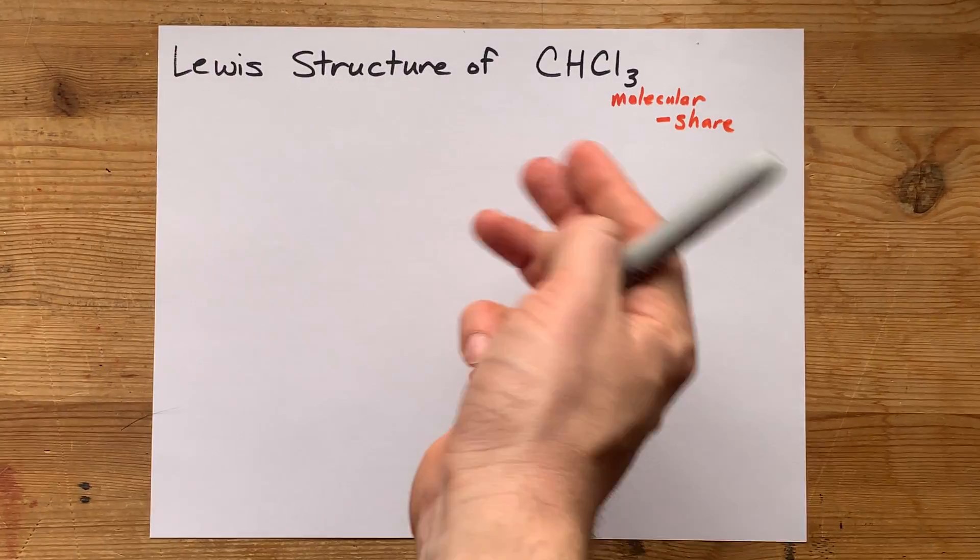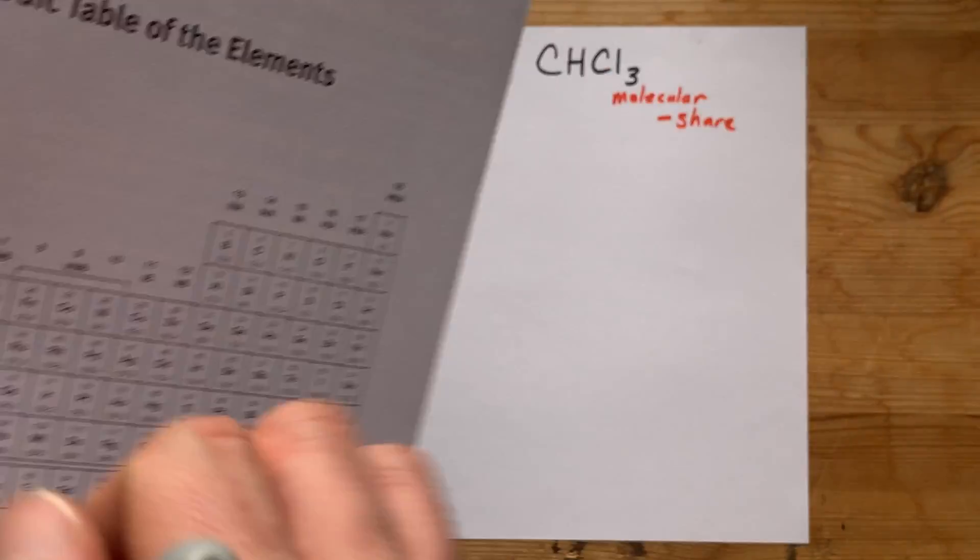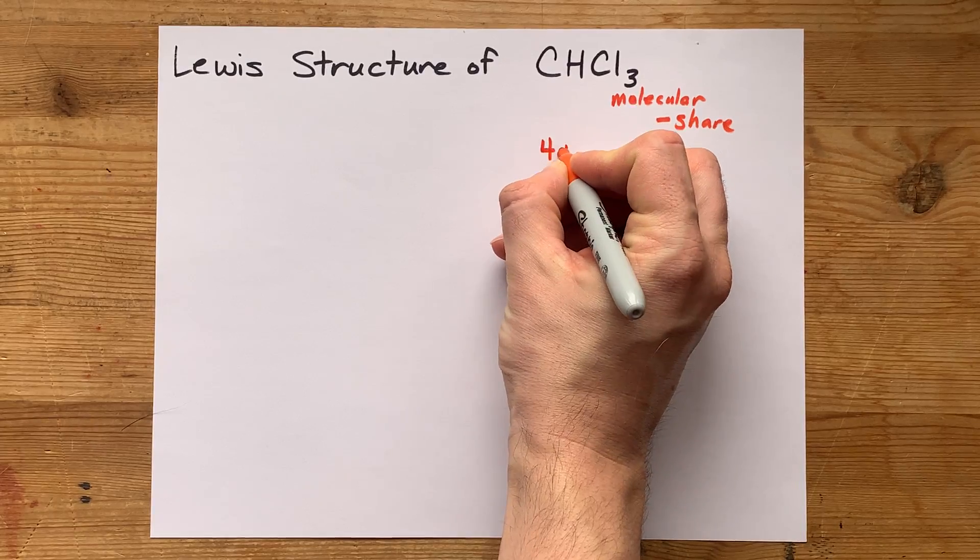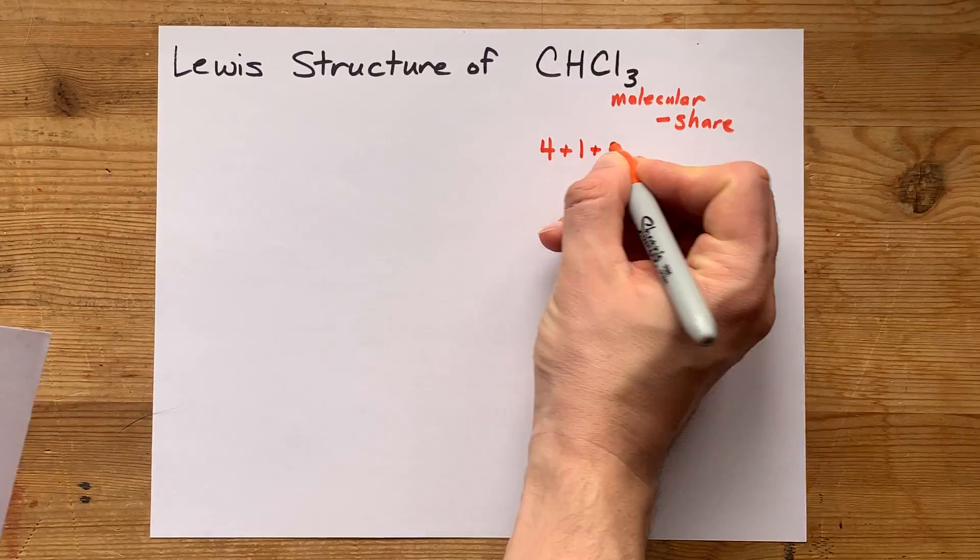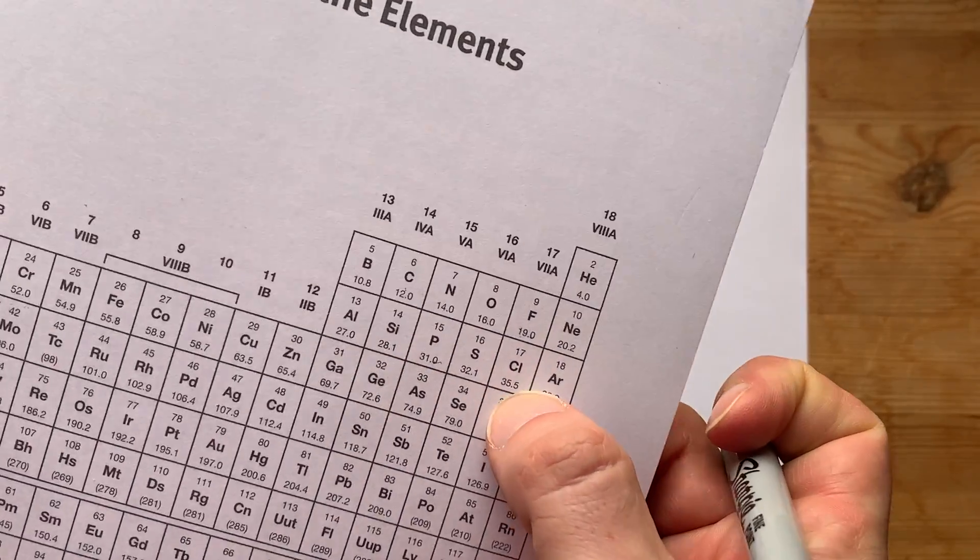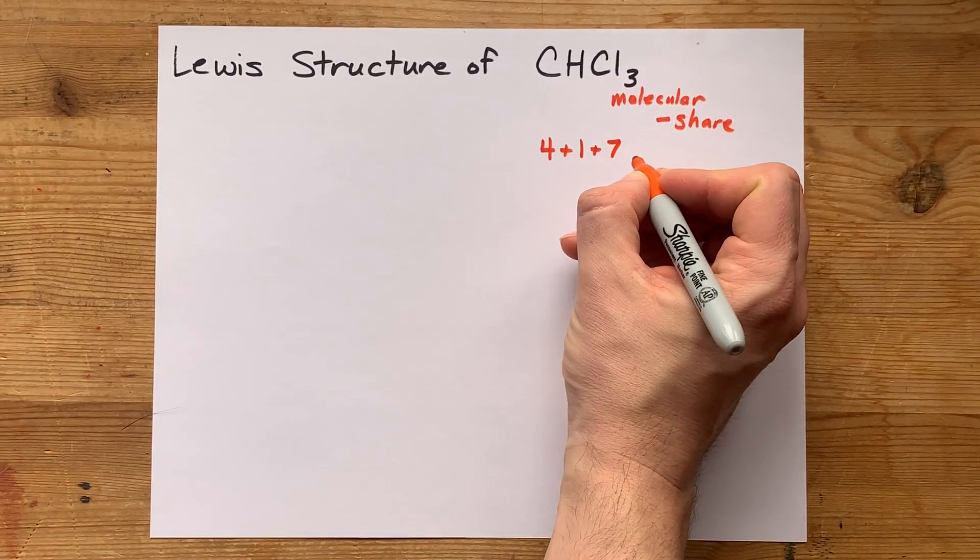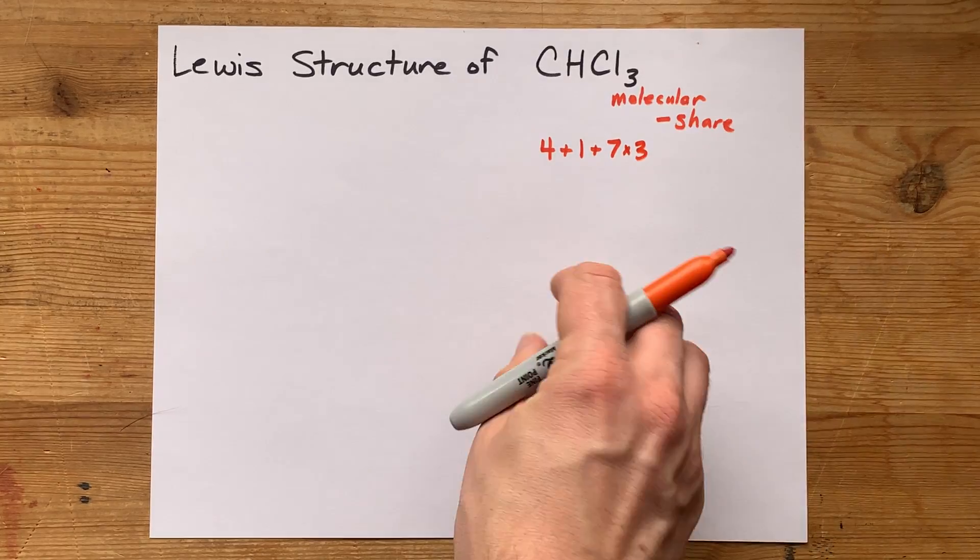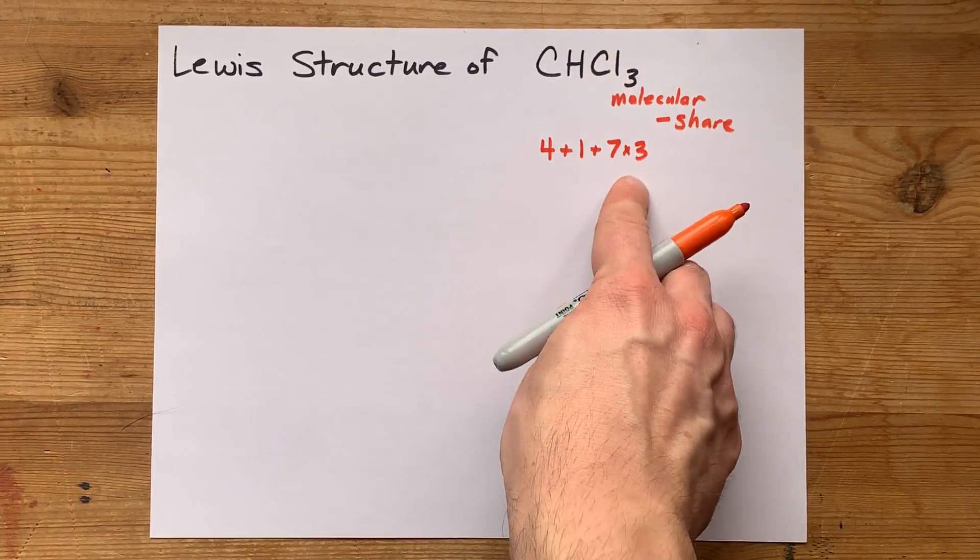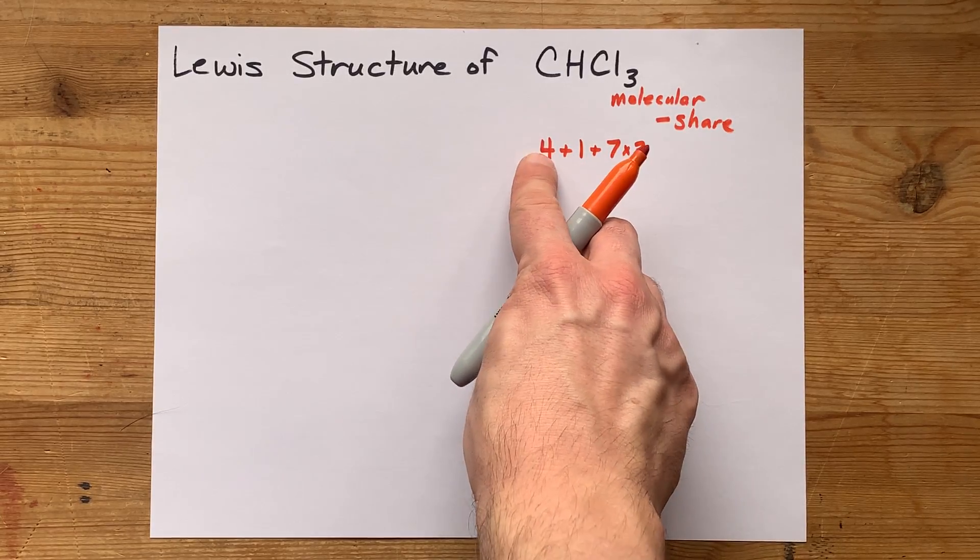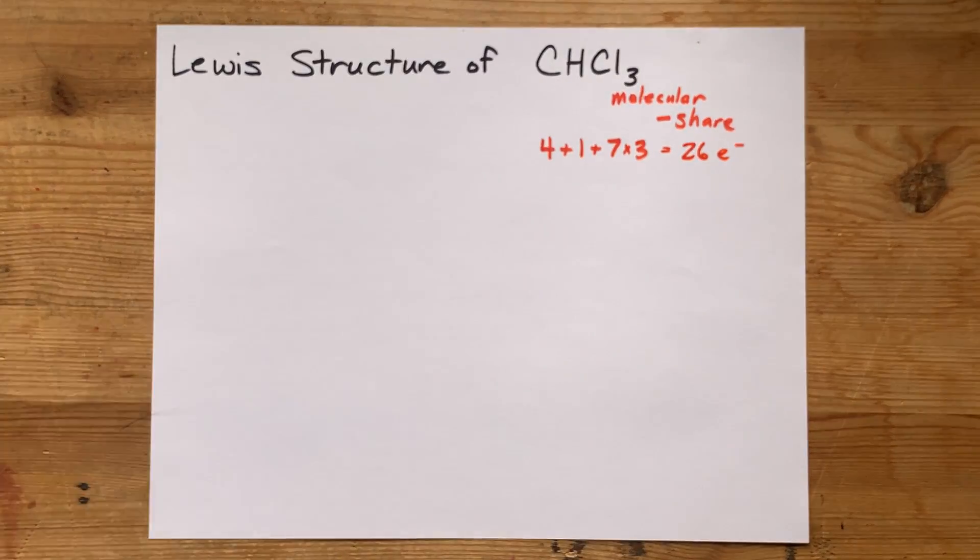Now let's see how many valence electrons we're even dealing with here. Carbon in group 14 brings four valence electrons with it. Hydrogen in group 1 brings one valence electron with it. And chlorine in group 17 brings seven valence electrons each. Don't forget there are three of them, so that's seven times three, or 21 electrons just from the chlorine. 22 and 4 makes 26 electrons that we have to deal with in the Lewis structure.